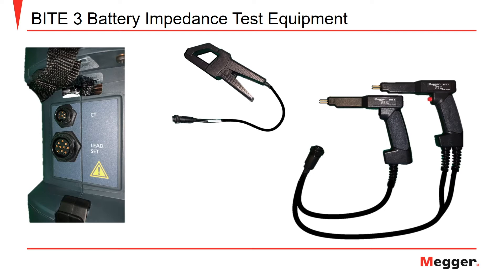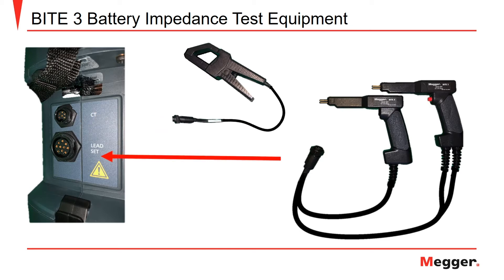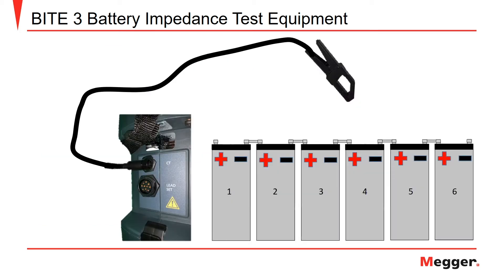The connections for the amp clamp and test leads are located on the right-hand side of the transceiver. If you are using the optional amp clamp, you will connect it to the J2 connector labeled CT. The larger J1 connector is where you will insert the plug for the Byte 3 test lead set. If using the optional amp clamp, it would be applied to the battery string by placing it around one of the intercell strap connections — in this case, between cells 3 and 4. This is only necessary for the escape current and impedance modes of operation.